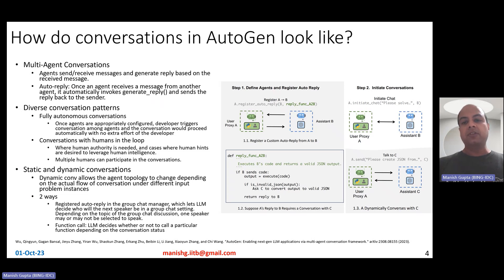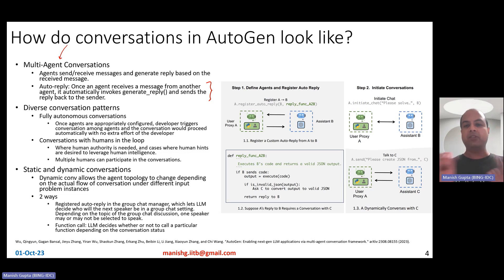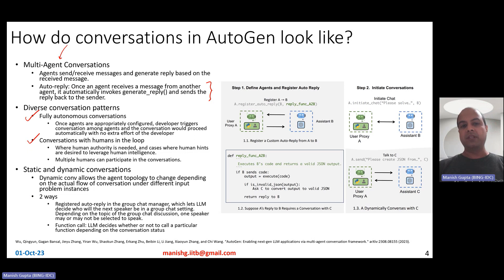How do conversations in Autogen look? Agents have the capability to send messages, receive messages, and generate replies based on the received message. Every agent has a default auto-reply — once the agent receives a message from another agent, it automatically invokes a generate reply and sends the reply back to the sender. There are different kinds of conversation patterns: fully autonomous conversations versus conversations with humans in the loop, giving different levels of autonomy from a human interaction perspective.